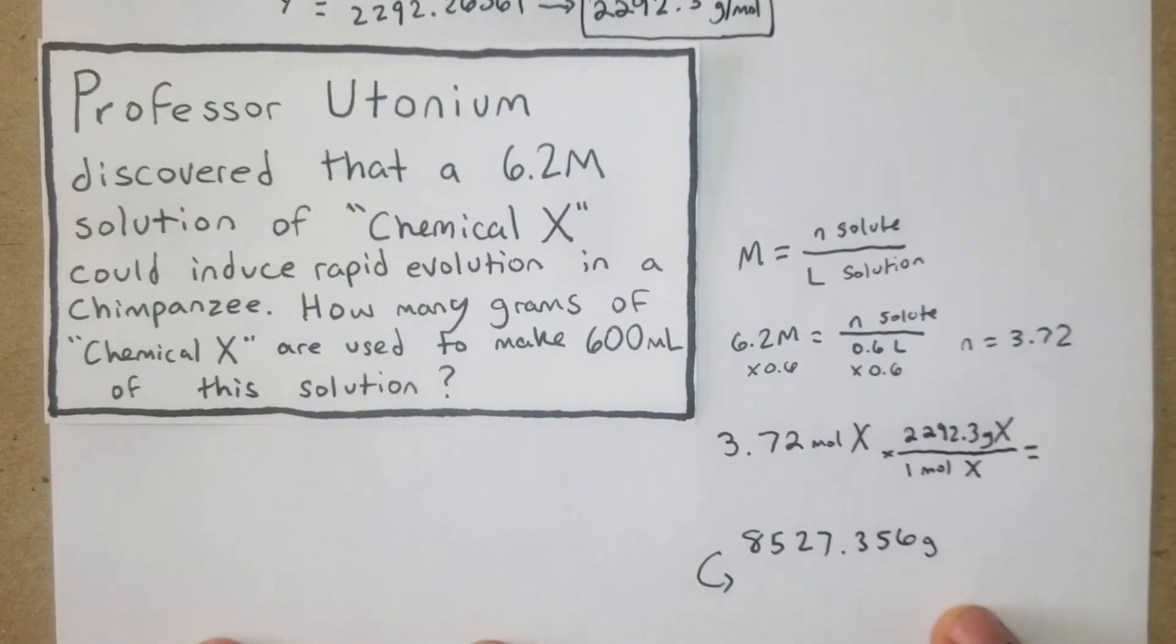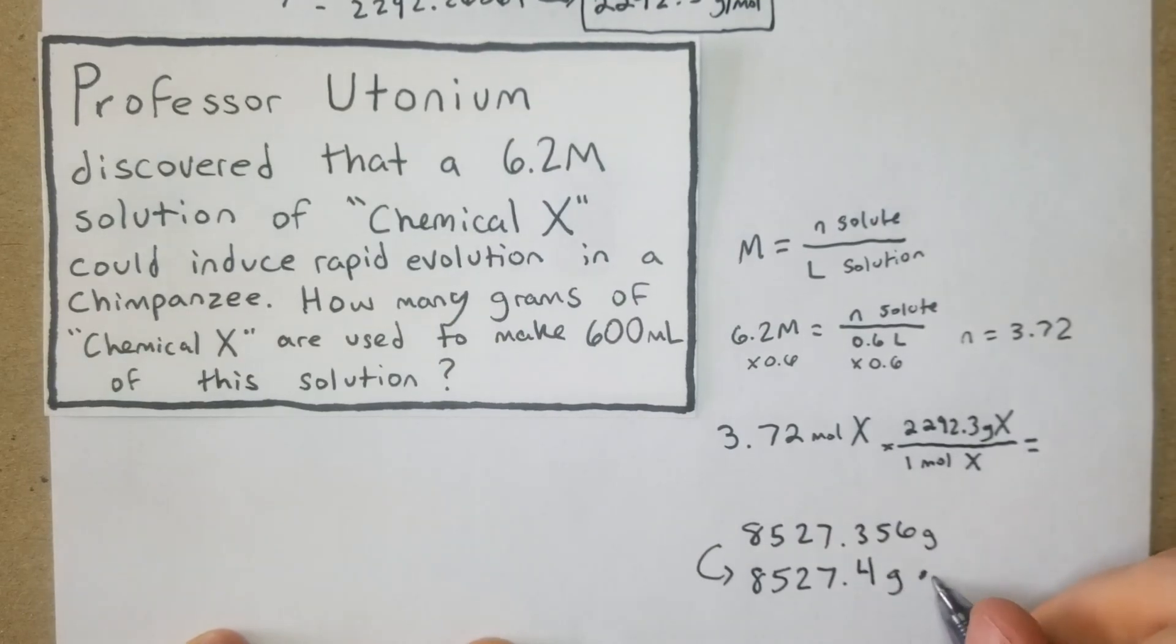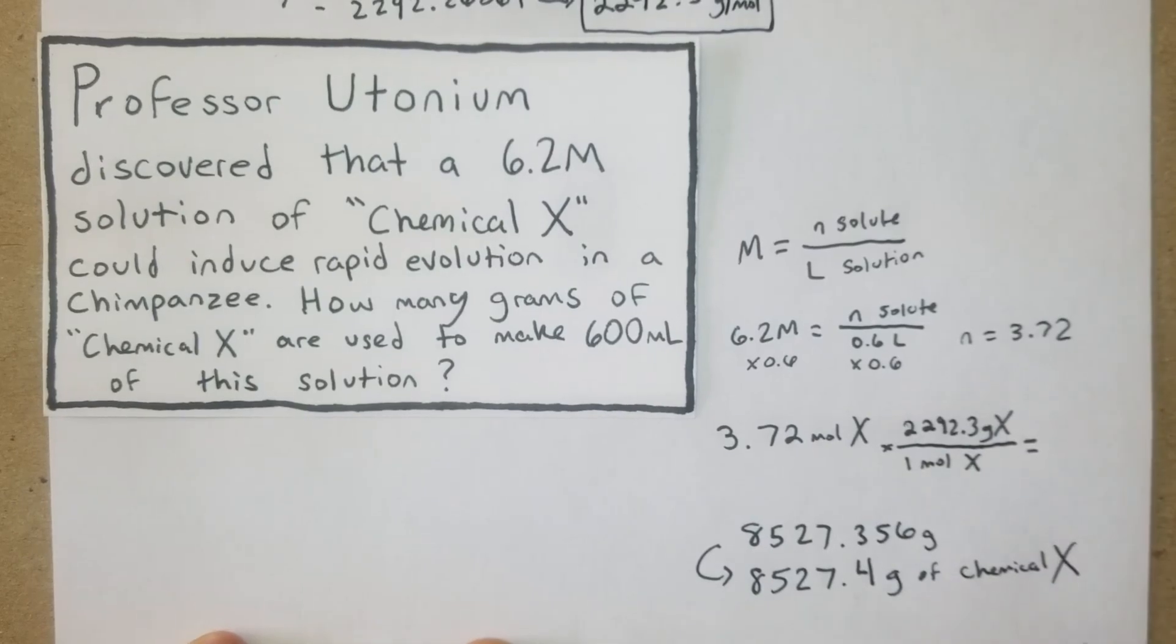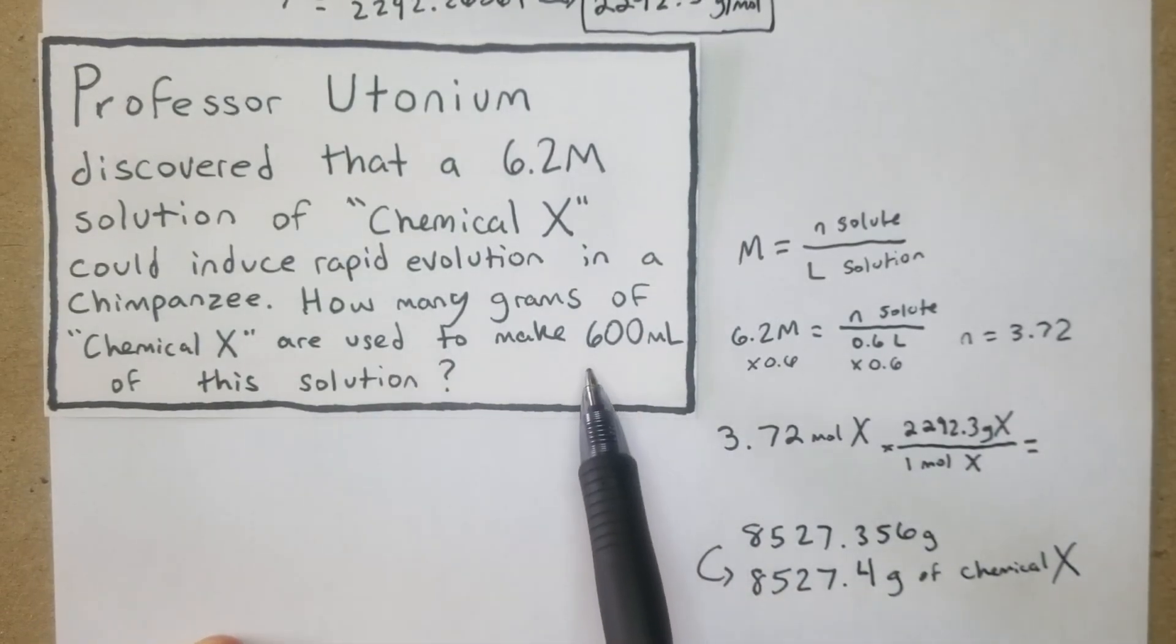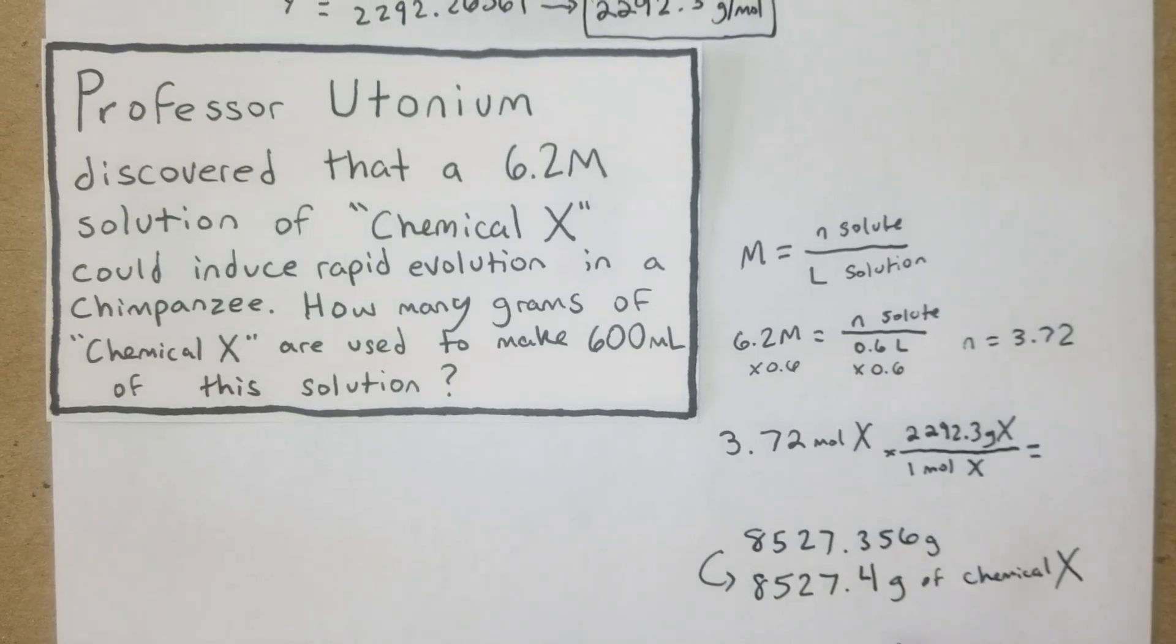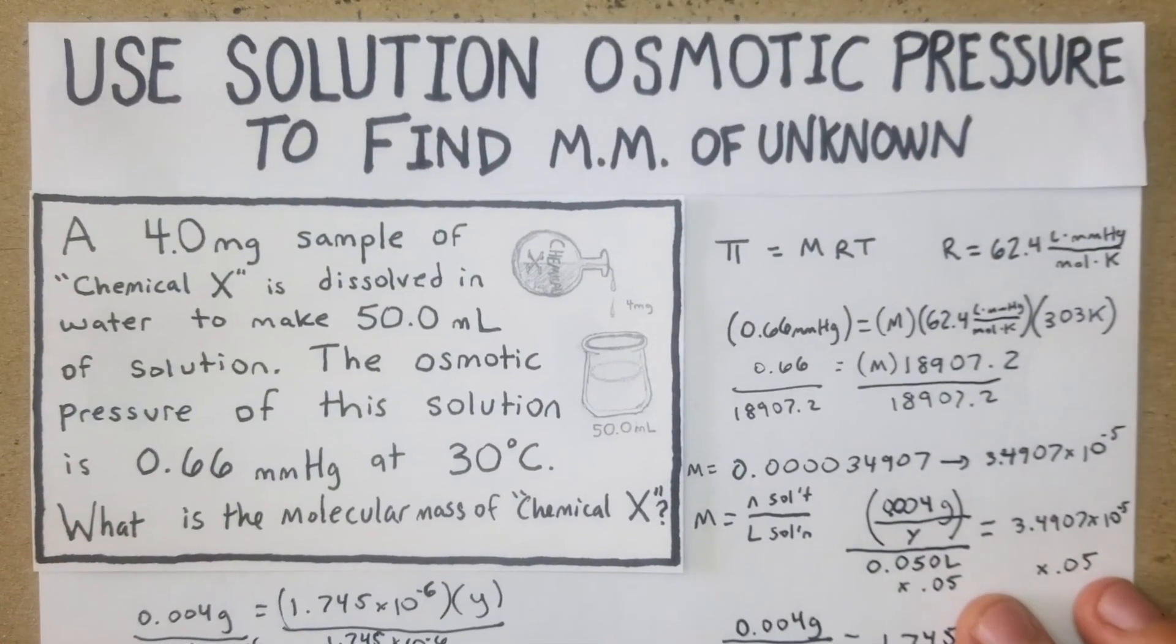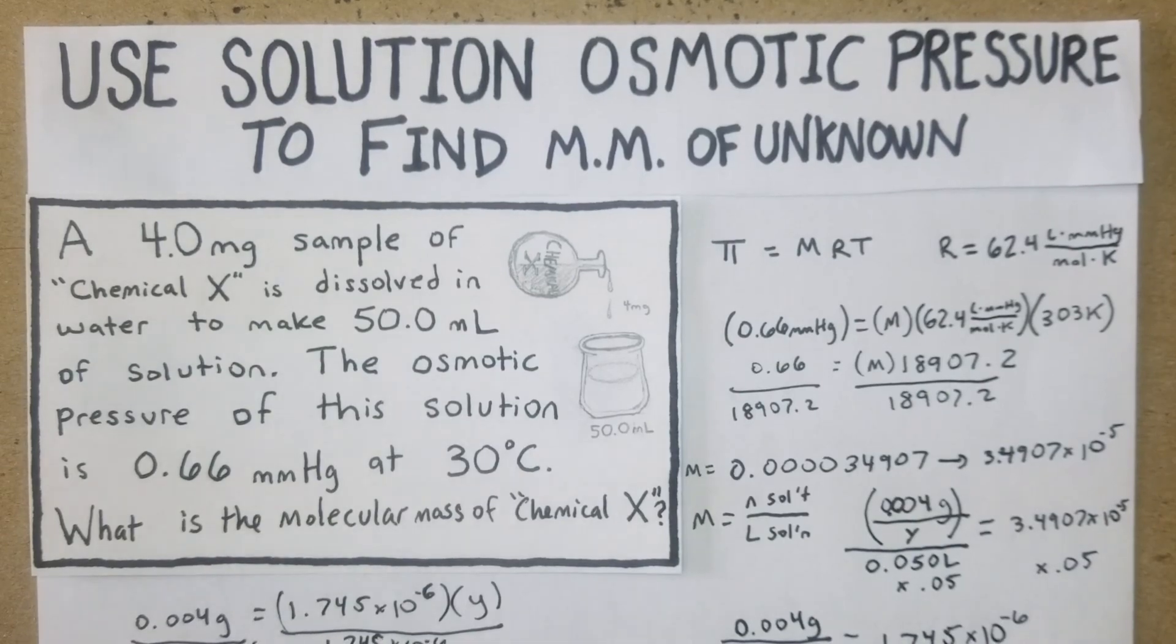We can just make that 8527.4 grams of chemical X. It says how many grams of chemical X are used to make 600 mL of this solution, so we have this many grams and that's going to go into the water to make the 6.2 molar solution. So there we go, that's kind of the basics of how to find the molar mass - really that was just the first problem, but I wanted to expand it a little bit. Hopefully this is helpful to someone.